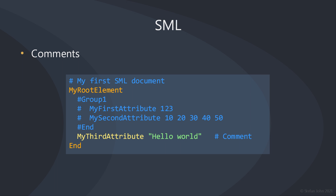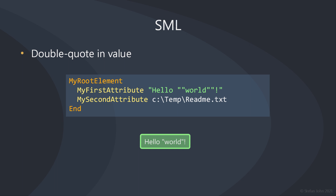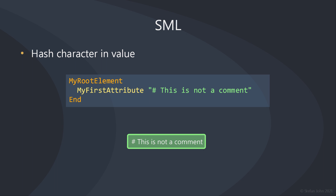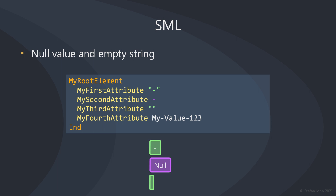If you want to put a comment over or behind an element or attribute, you can do so using the hash character. In the example I inserted a comment line before the start of the root element. I also commented the group1 element out and wrote a comment behind the third attribute. Now let's have a look at some special cases of values. If your value contains the double quote character, it is escaped by another double quote. If your value contains the hash character, it also needs to be enclosed in double quotes. If your value is simply the minus dash, it also needs to be enclosed in double quotes, because a minus dash without double quotes denotes the null value. An empty string is simply denoted by two double quotes.